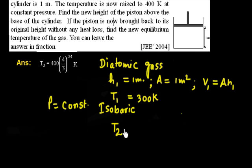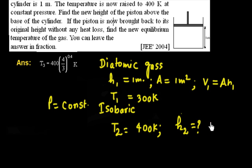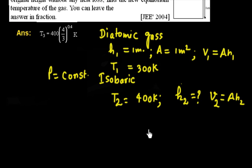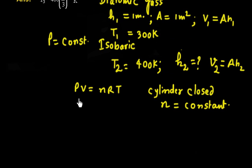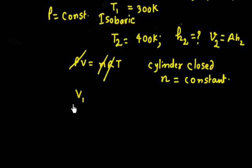The final temperature T2 is 400 Kelvin. We have to find the new height H2, where V2 = A × H2. Since this is an isobaric process and the cylinder is a closed system, the number of moles n is constant. With n constant, P constant, and R constant, we can write V1/T1 = V2/T2.